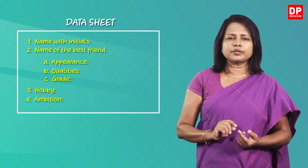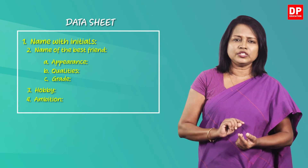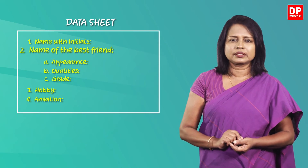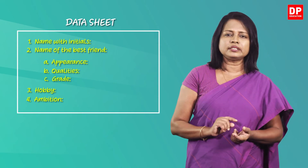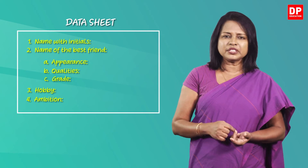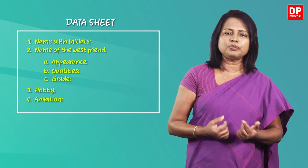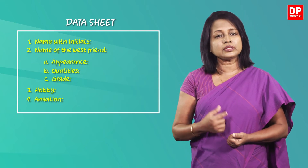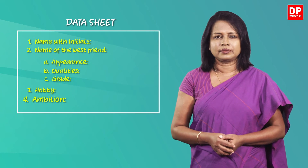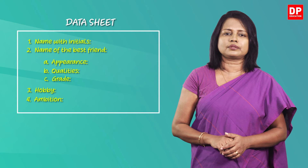The first point requires you to find Shakti's name with initials, and the second point is about his best friend. You can fill in the information while listening to the dialogue.